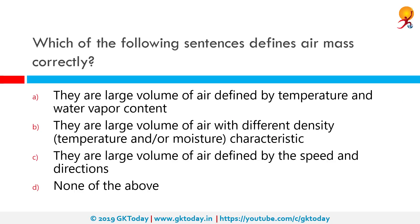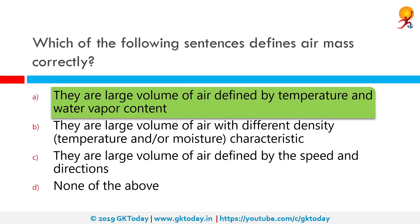Which of the following sentences defines air mass correctly? The correct answer is that they are large volumes of air defined by temperature and water vapor content. In meteorology, an air mass is a volume of air defined by its temperature and water vapor content. Air masses cover many hundreds or thousands of miles and adapt to the characteristics of the surface below them. They are classified according to latitude and their continental or maritime source regions.